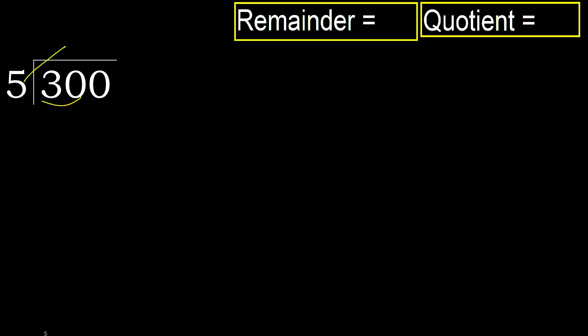5 multiplied by which number is nearest to 30, but not greater? 5 multiplied by 7 is 35, which is greater. 5 multiplied by 6 is 30, which is not greater.